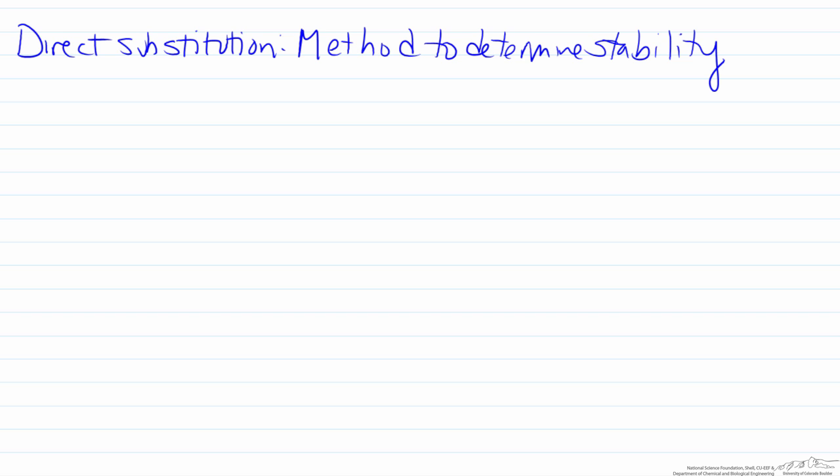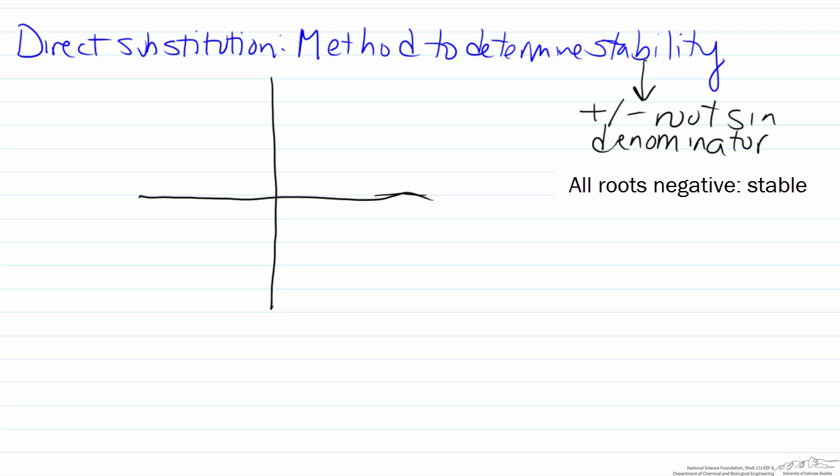Recall that stability is dictated by the presence of positive or negative roots in the denominator. If all the roots are negative then the process is stable, and if at least one is positive the process is unstable.